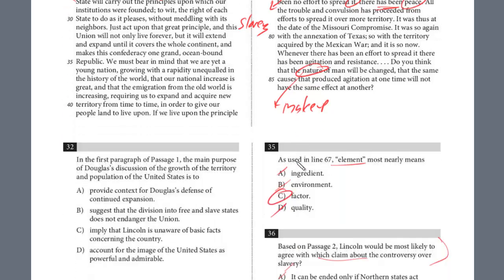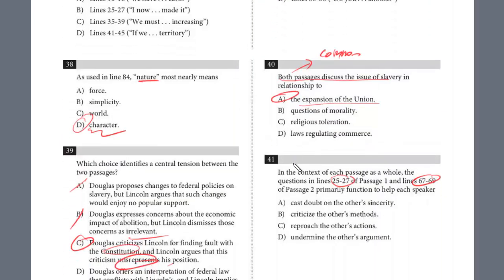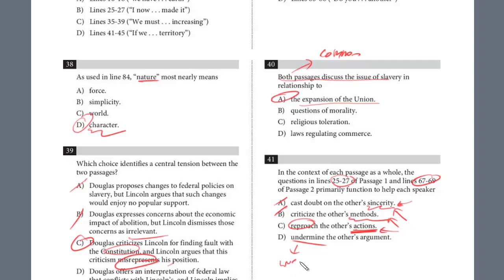So what's the function — the purpose each is trying to achieve? Let's look at the choices. Choice A: cast doubts on each other's sincerity. Sincerity is really not accurate — it's not that they're not being sincere; they're casting doubt on the argument, not the sincerity. Choice B: criticizing the methods — not really. Choice C: reproach — which means to criticize the other's actions — again, not the actions. The reason all of these look tempting is you see the first words: cast doubt, criticize, reproach — all could work, but you have to pay attention. It's not the sincerity, not the methods, not the actions. Choice D: undermine — meaning to attempt to weaken or contradict the other's argument. This is what they're doing. It's a debate. The answer is D.